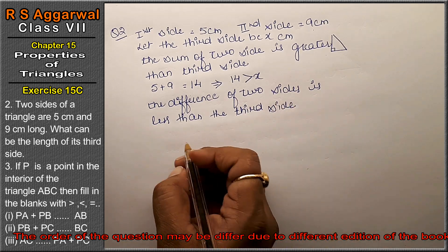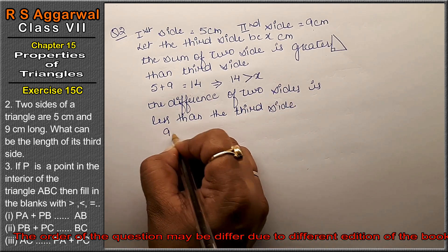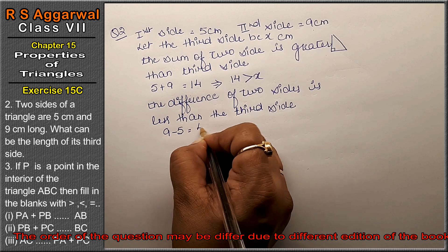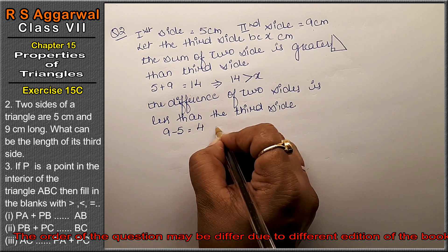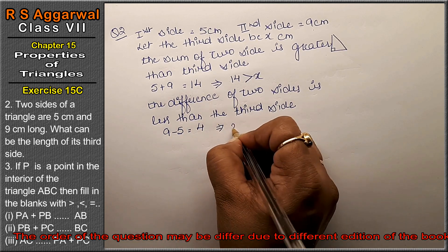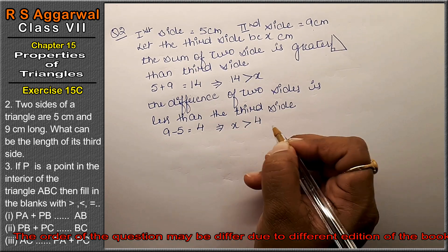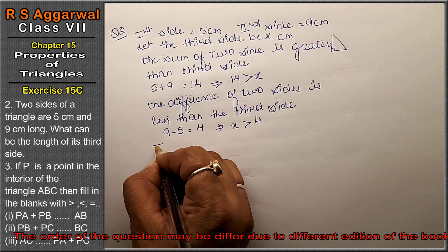9 minus 5 equals 4, so 4 is less than x. This means x is greater than 4.